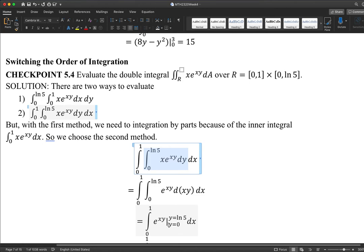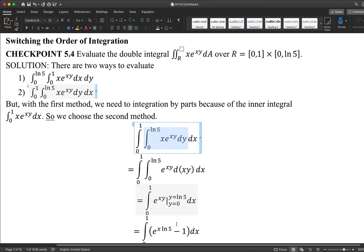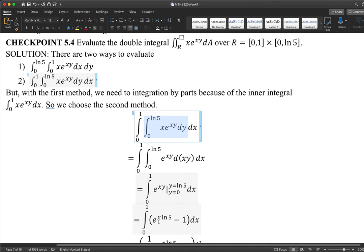Keep in mind, the way we got here, we consider integration into the y first. We are going to replace y with log n 5 and y with 0. Next round, I have this anti-derivative e to the x times log n 5. This is when I put in log n 5 for y here. When I put in 0 for y into the same expression, it's e to the 0. This is how I get 1.